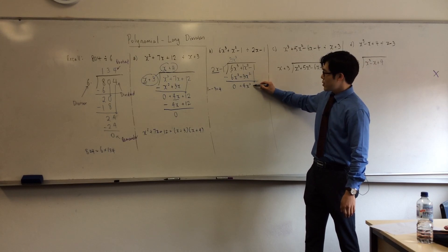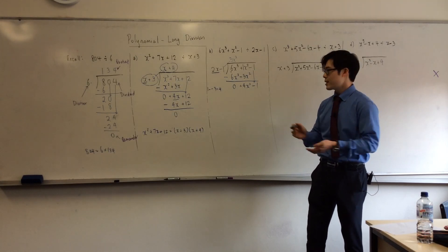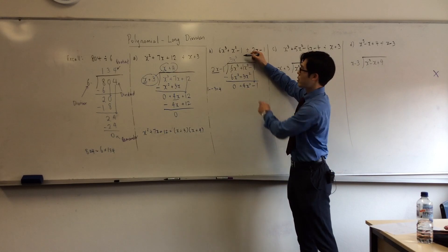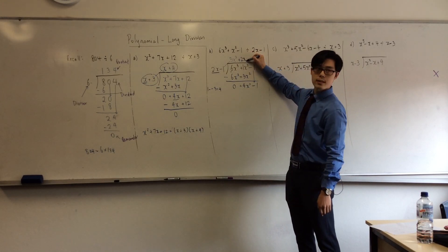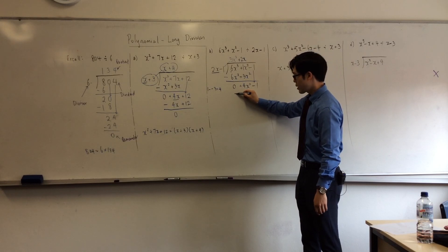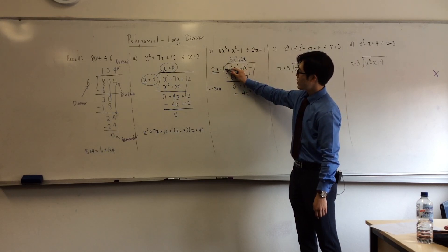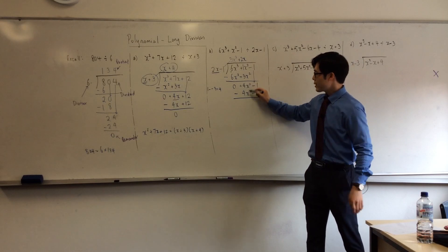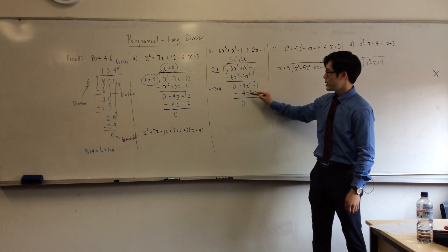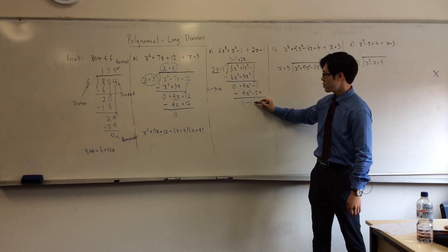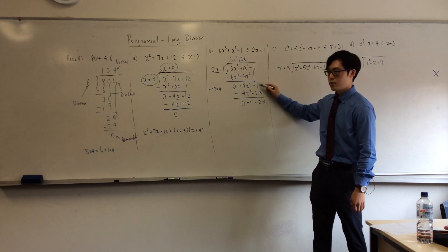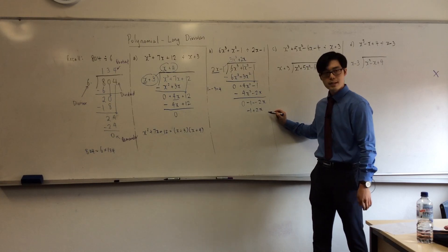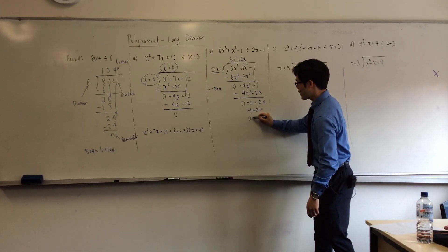After that, you bring the next term down. Ask yourself the same question: how many 2x's go into 4x squared? If 2x times what is 4x squared? Plus 2x. Because 2x times 2x is 4x squared — always take away. Then times it by the second term: minus 1 times 2x is minus 2x. So that 4 take away 4 is 0. Notice in this case we can't do minus 1 take away 2x, because this is a number and this is a letter. So we just write it as it is. I'm going to rearrange this and write 2x first and minus 1.